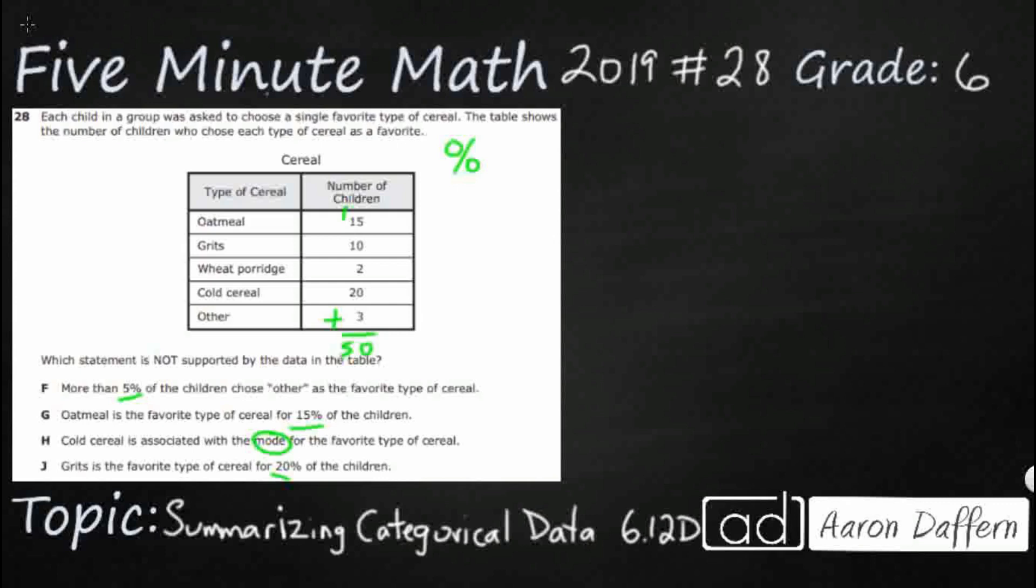All right, so that's going to be fairly easy. So what we need to do is we need to turn each of these into fractions. So 15 out of 50 children chose oatmeal. 10 out of 50, 2 out of 50, and so on and so forth. Because all of these fractions need to add up to 50 50ths. So that's one step. We turn these into fractions out of the total. But now we need to turn these into percents.